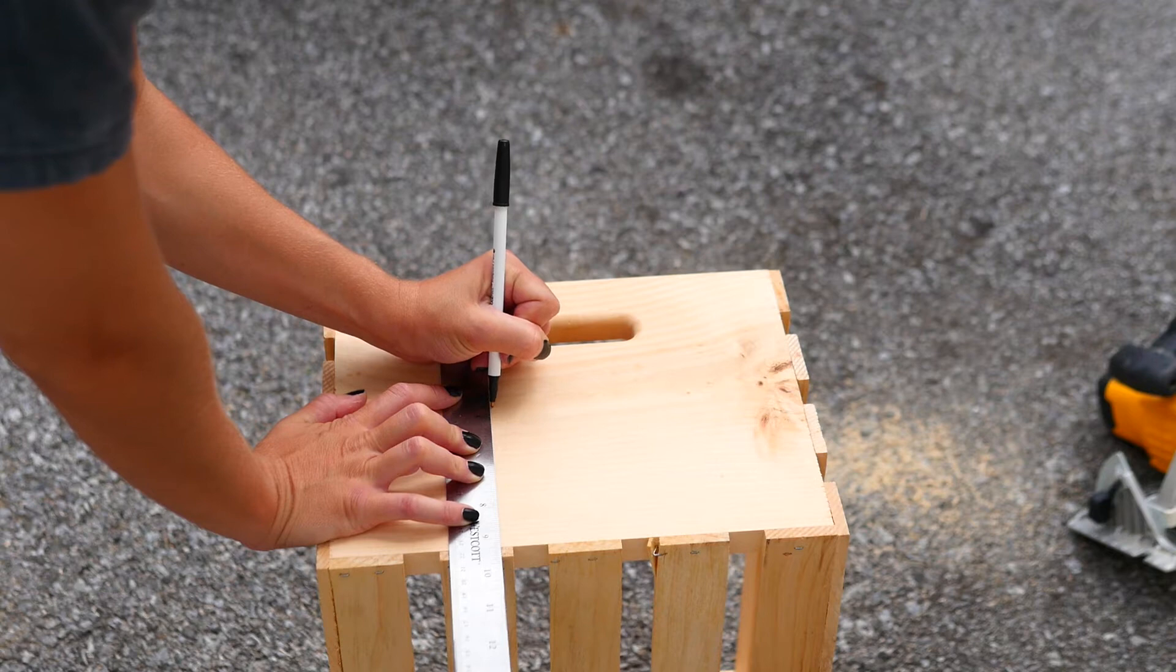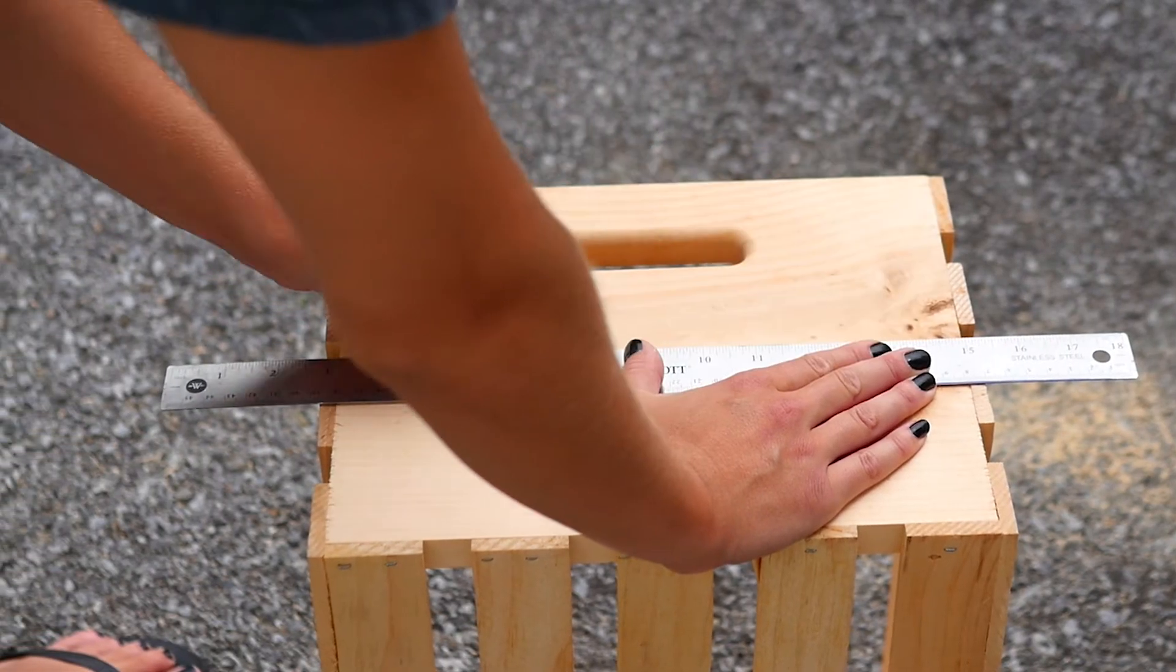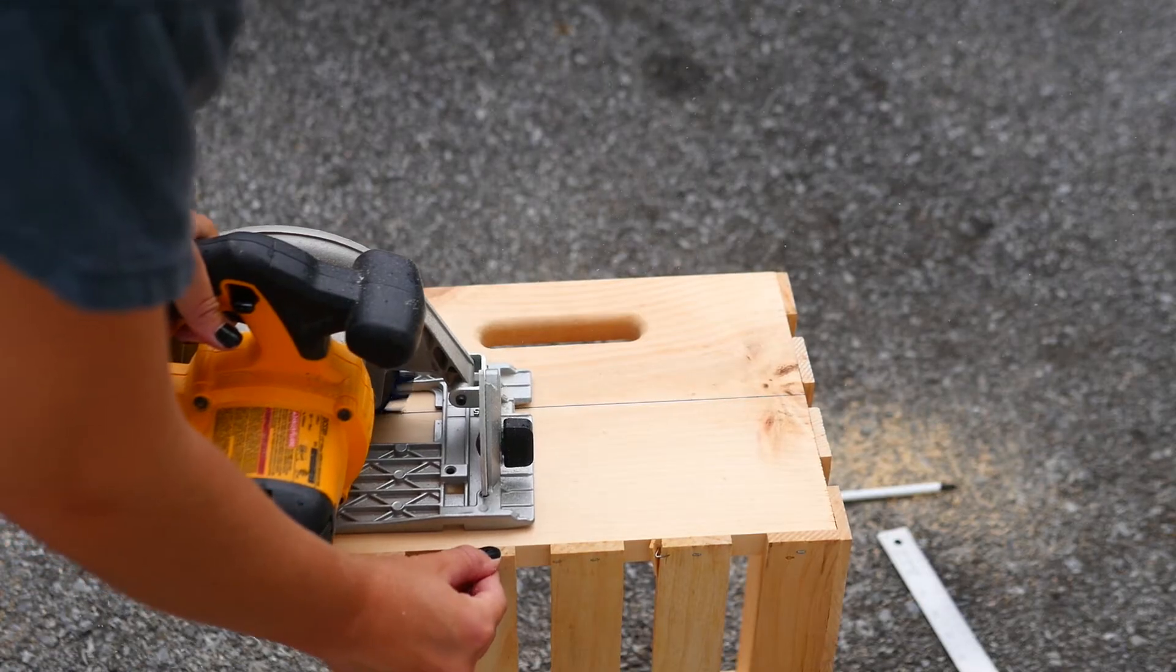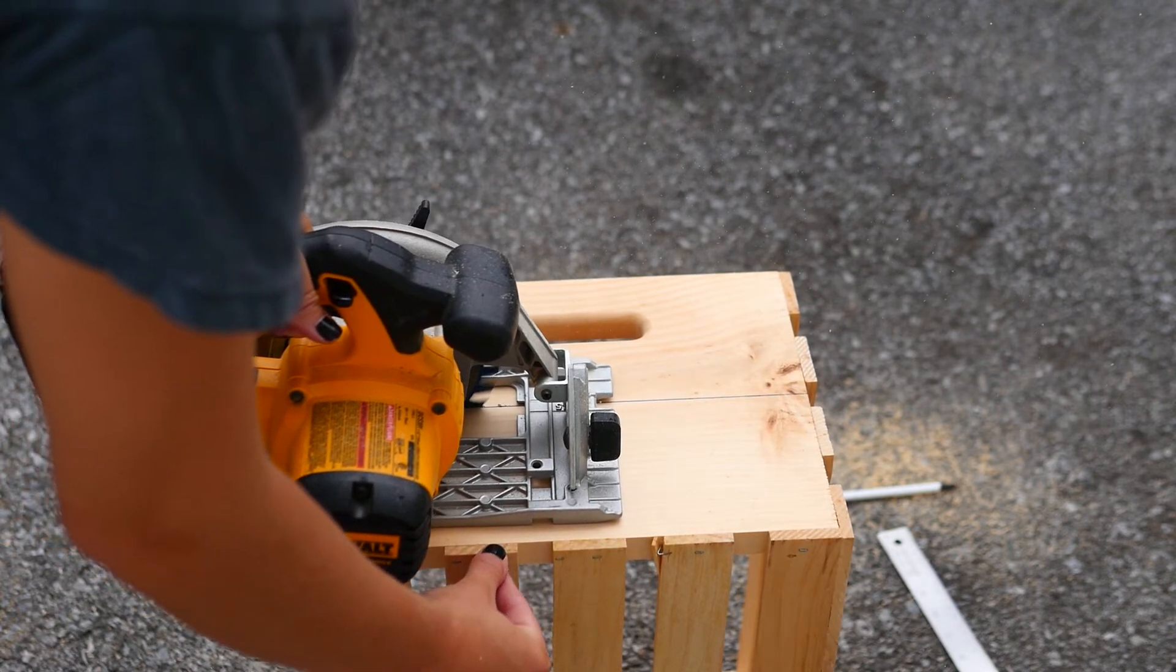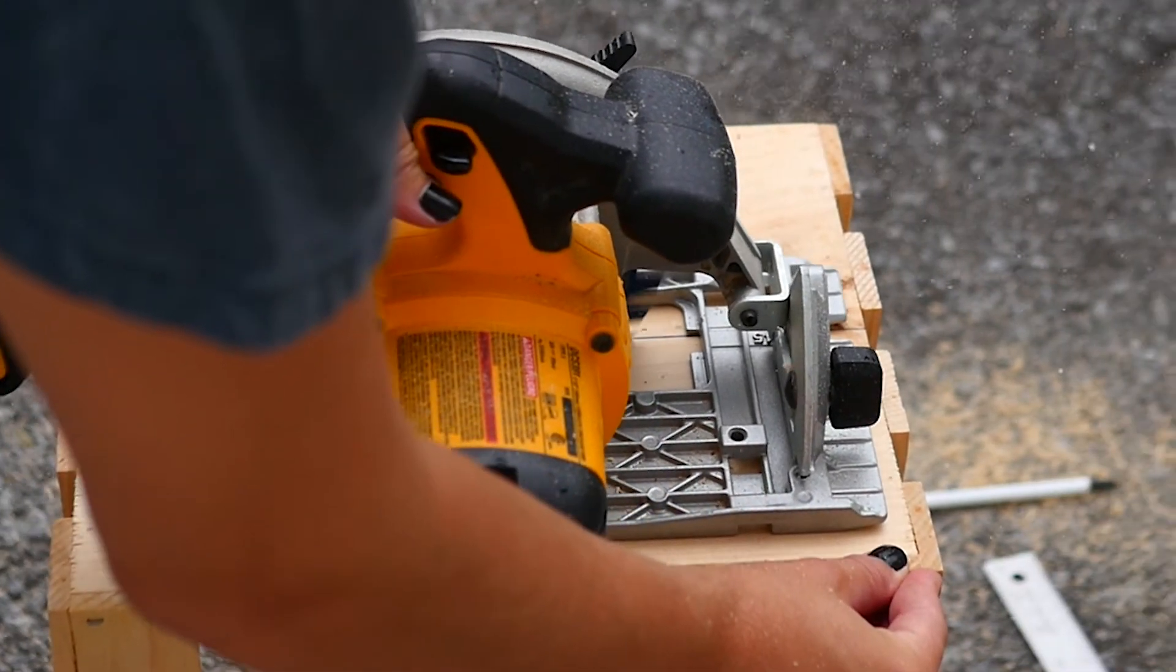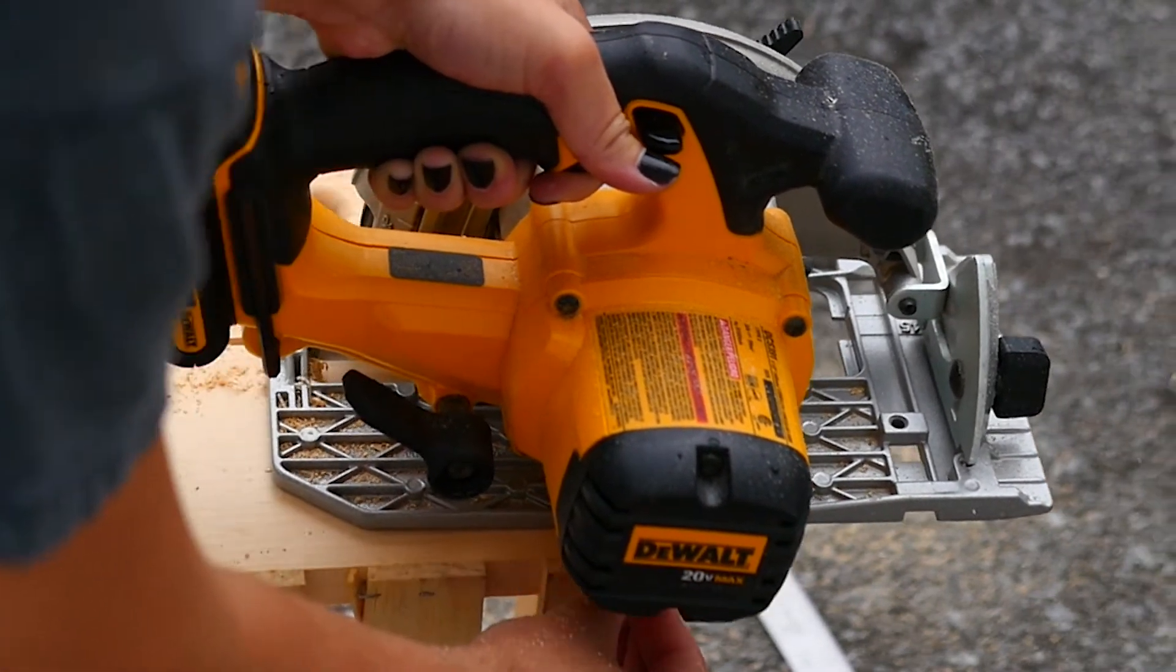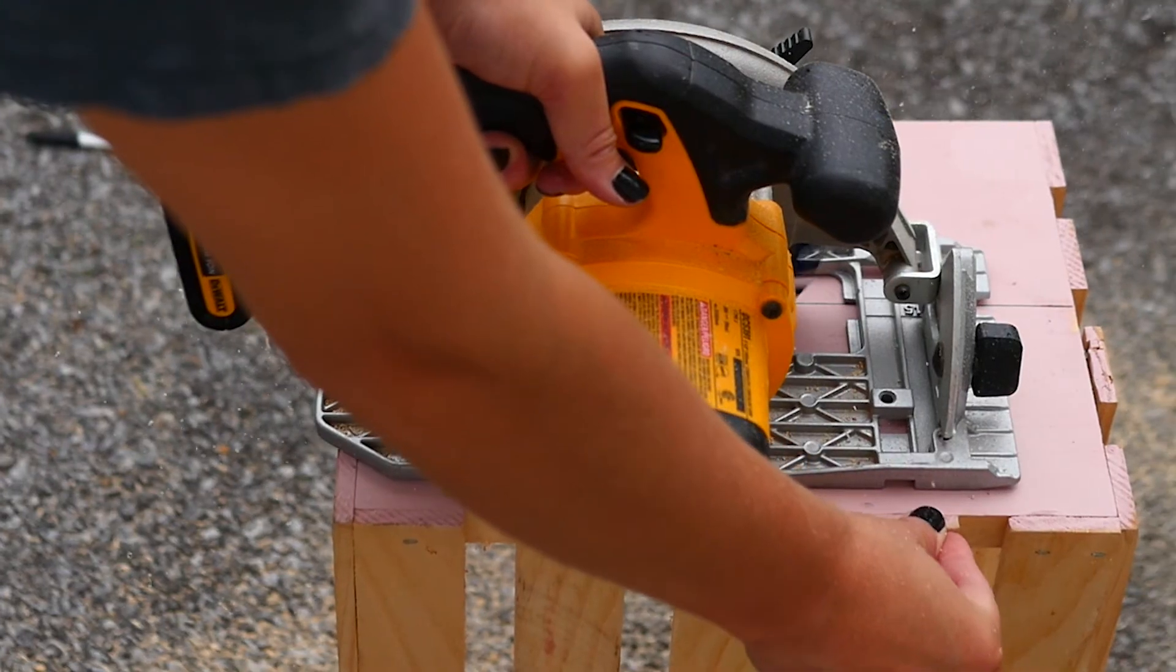Start by using a ruler to measure roughly at the halfway point. Make two dots and then connect them in a straight line. Next, use a circular saw to cut along the line. Repeat these same steps on the other side.